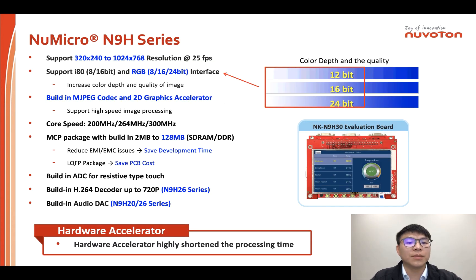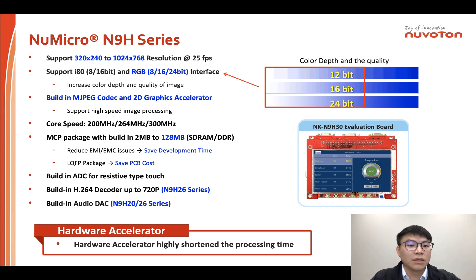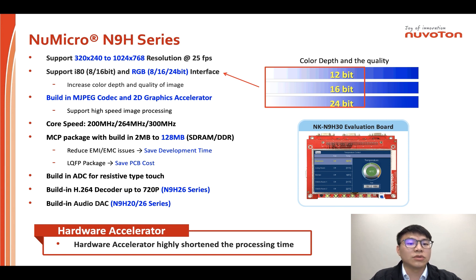The NeuVertone N9H series is based on ARM9 core. It contains three sub-series: N9H20 at 200MHz, N9H26 at 264MHz, and N9H30 at 300MHz. Three key points about N9H: first, the series uses chip-on-package technology to build in 2MB to 128MB SDRAM, which reduces EMI effects and shortens product development time. Second, it adopts LQFP package instead of BGA, which reduces PCB errors and saves total board cost.